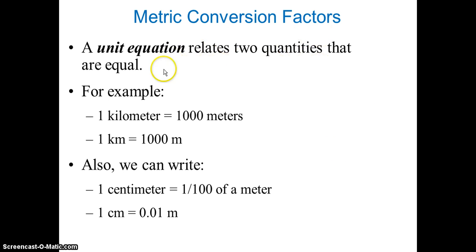We are going to talk about conversion factors in the next lecture. But let's talk about a unit equation. It relates two quantities that are equal. For example, one kilometer equals 1000 meters. And we can also write one centimeter is one hundredth of a meter, or one centimeter equals 0.01 meter. In the next lecture, we will talk about conversion.